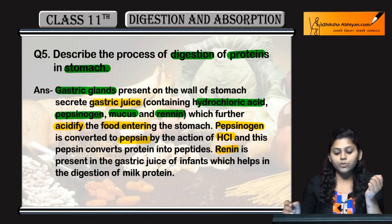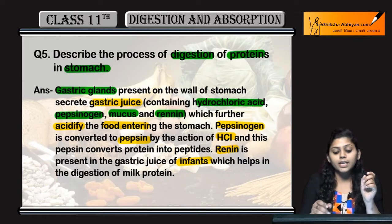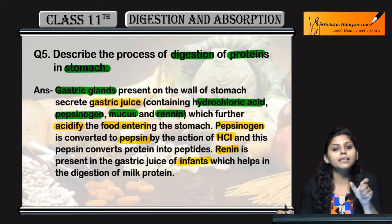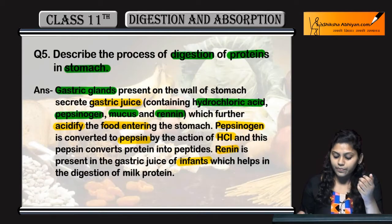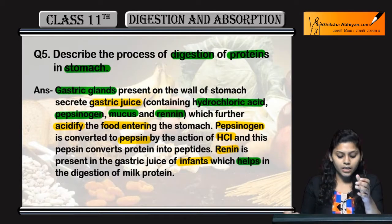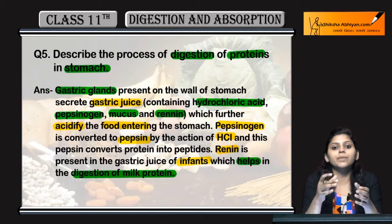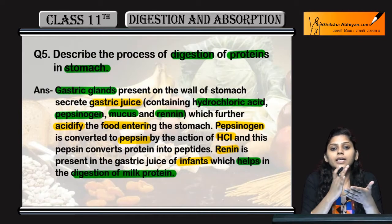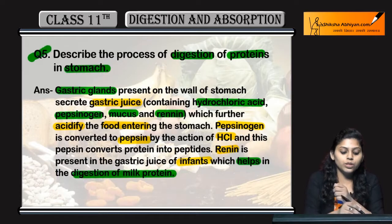Renin is only present in infants; in adults, renin is absent. Renin helps in the digestion of milk proteins. So milk protein ki digestion renin karta hai, and renin sirf infants mein present hota hai — in adults, renin is absent.